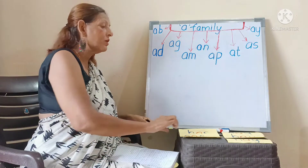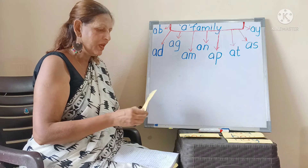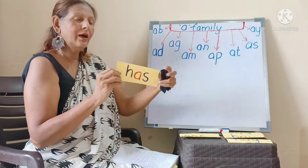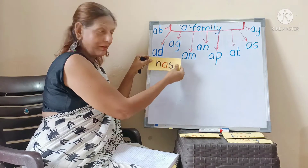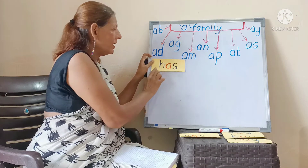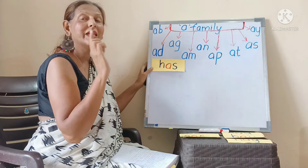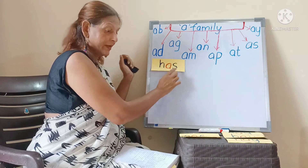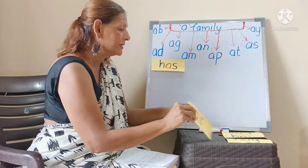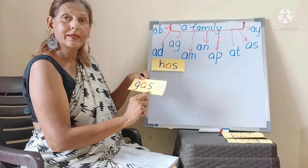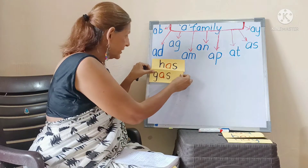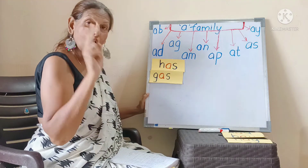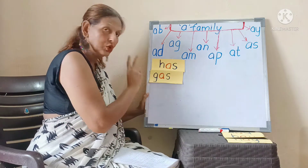Let's see what the first word is. The first word is H-as: has. Let me stick it here. The next one is G-as: gas. So those are two words from the 'as' family.